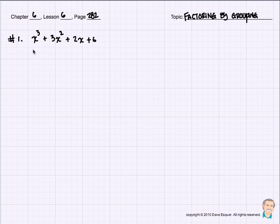So let's make sure we got four terms, because that's going to be our clue right off the bat. And we sure do. We have one term, two terms, three terms, four terms. So we know we've got those. We can probably use this technique: Factoring by Grouping.